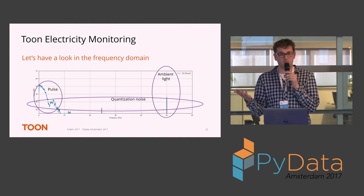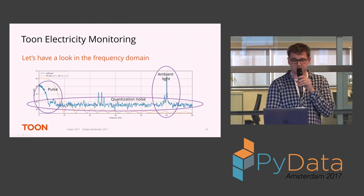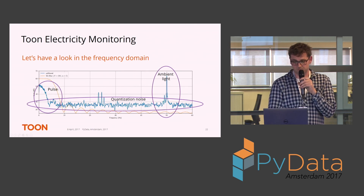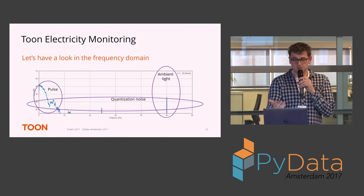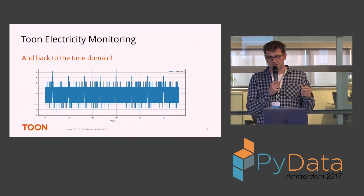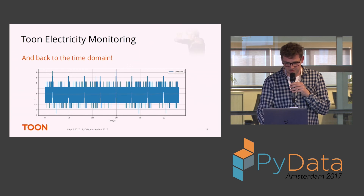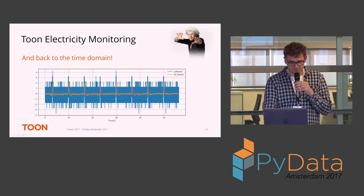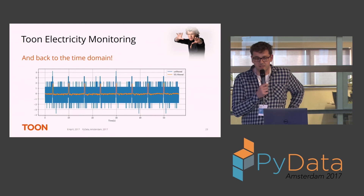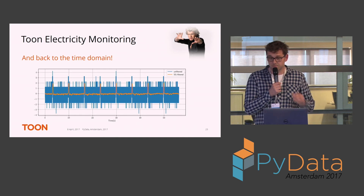After applying the filter, the result in the frequency domain looks very good — the noise is nicely attenuated. Going back to the time domain: we applied the filter and voilà — here we have the underlying pulse signal. You can see that all the noise is nicely removed, the quantization noise is gone. Looking at the eventual signal-to-noise ratio of this Savitsky-Golay filtered signal, it looks very promising.